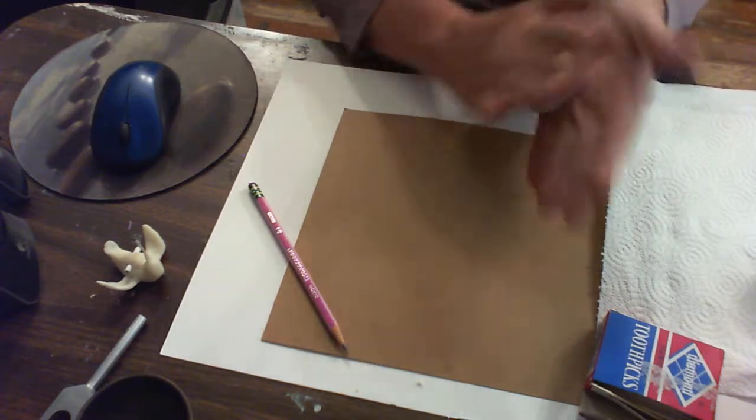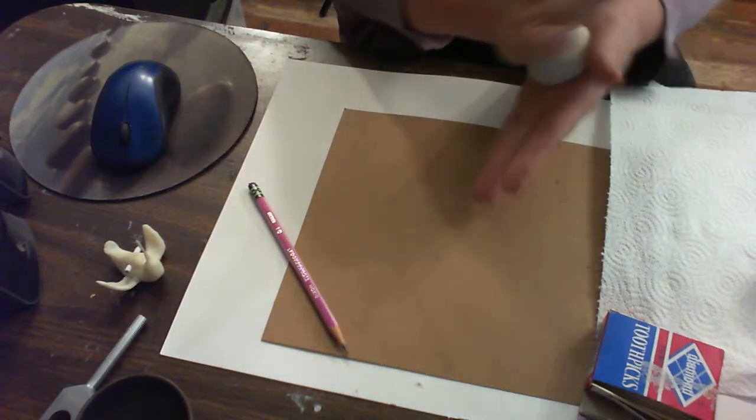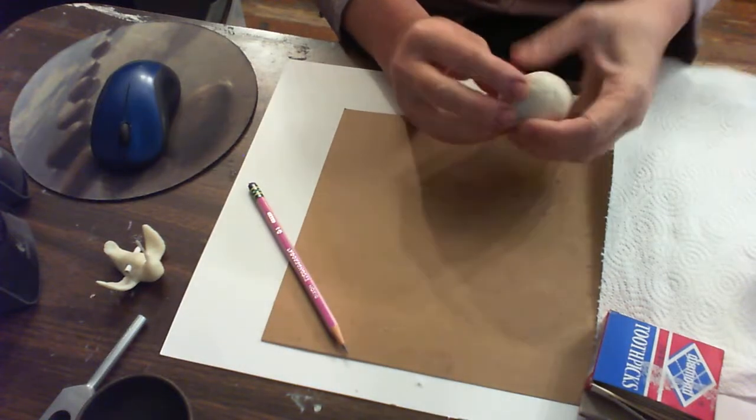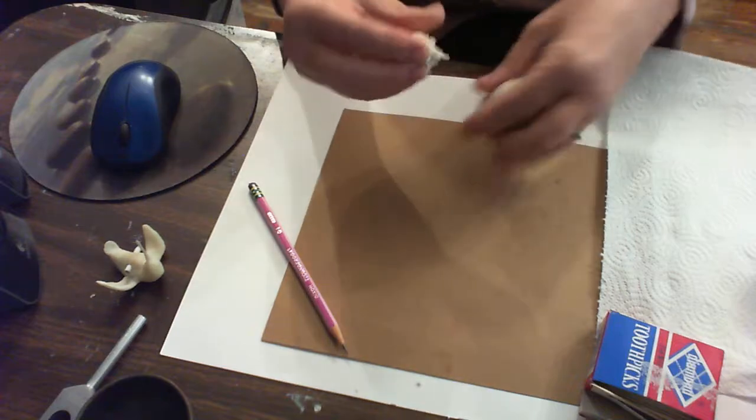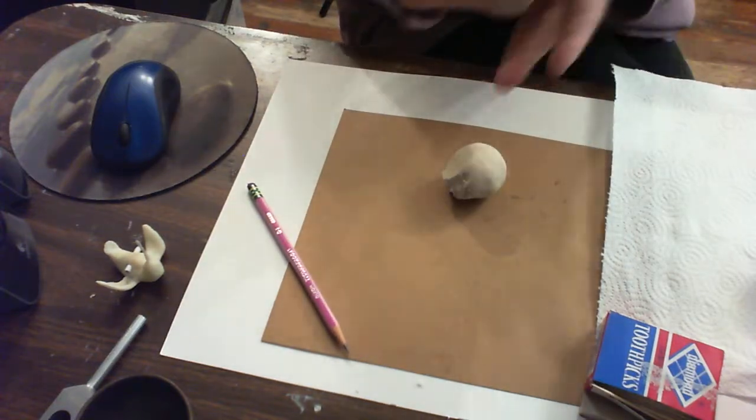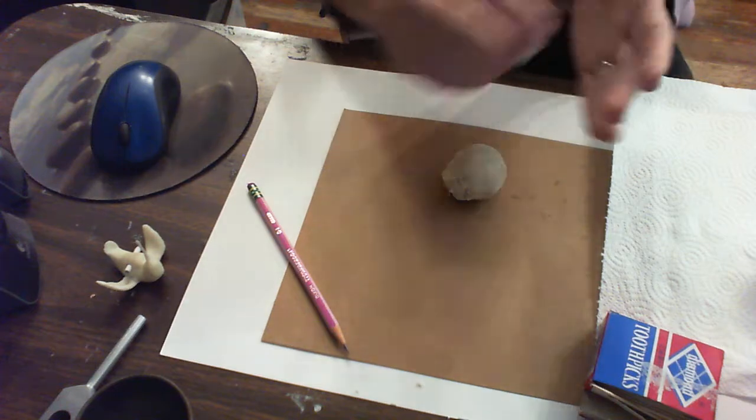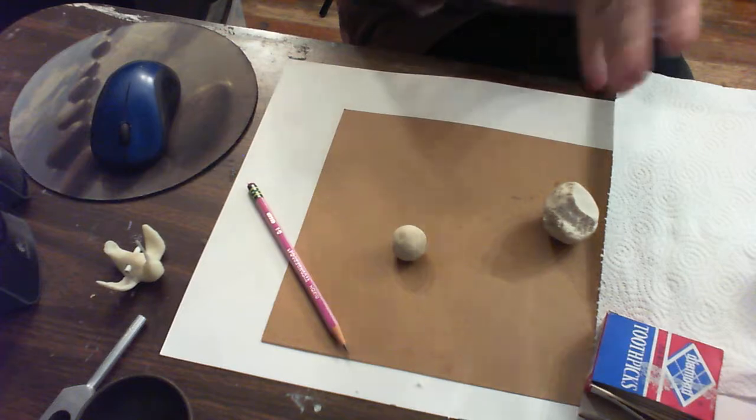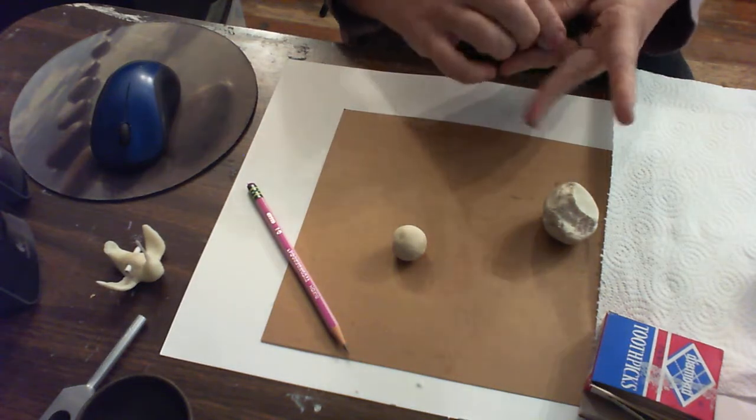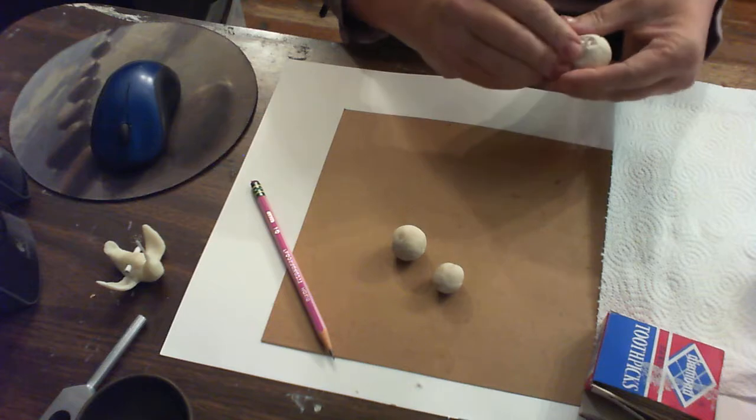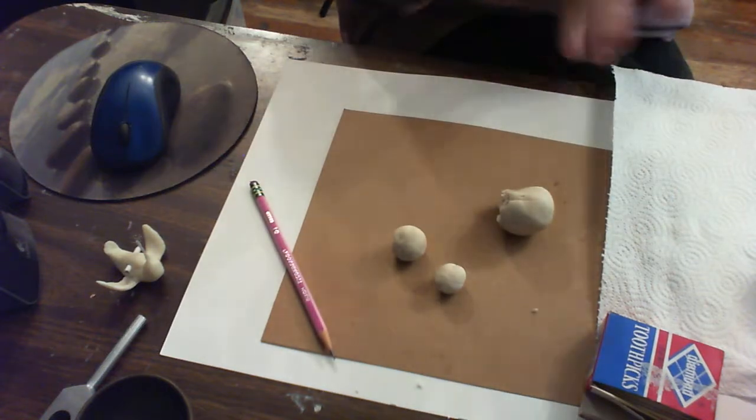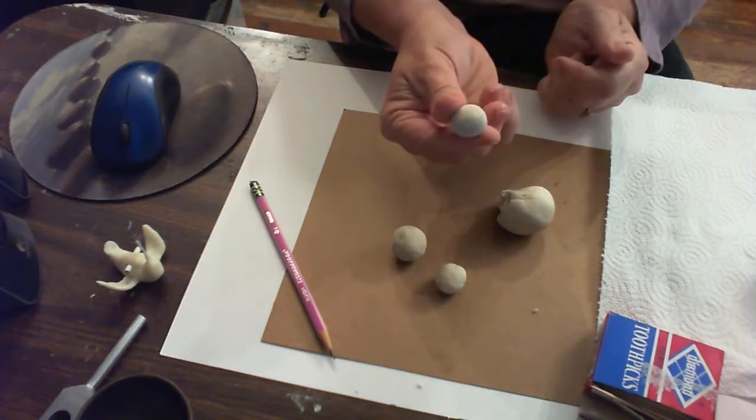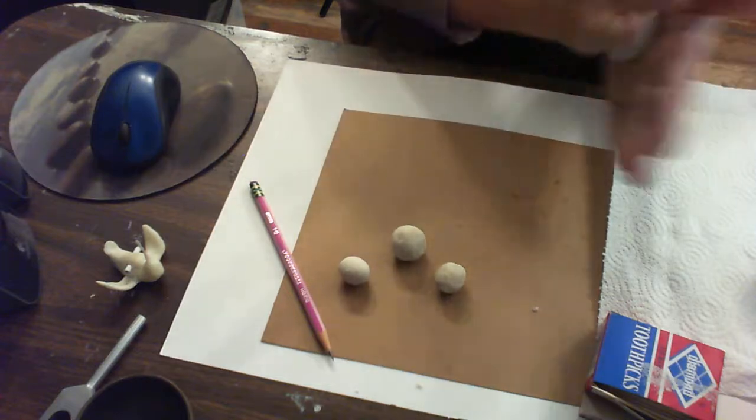I'm using the play-doh now and I'm going to make a dove. I'm going to divide it. Here's a little ball for the head, probably about the same size for the wings, and then the rest of it will be the body.